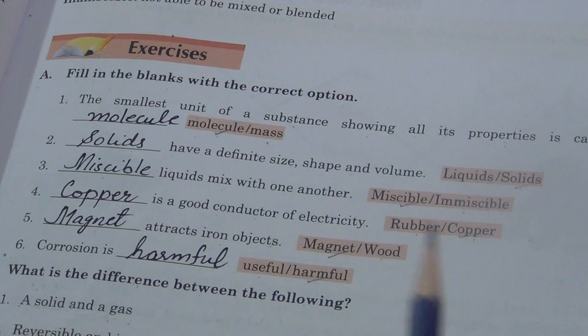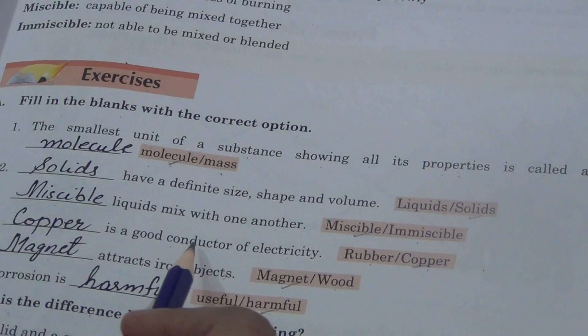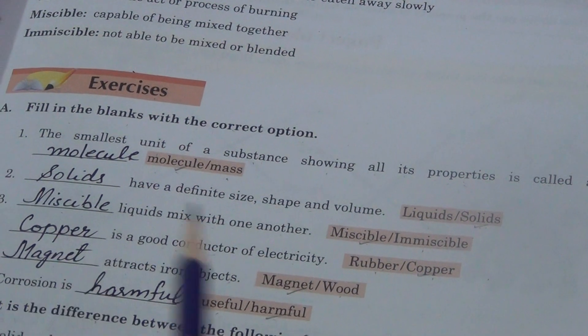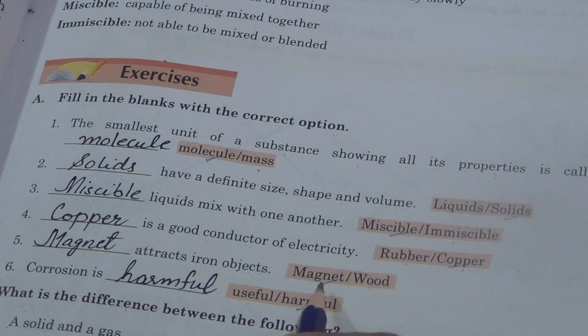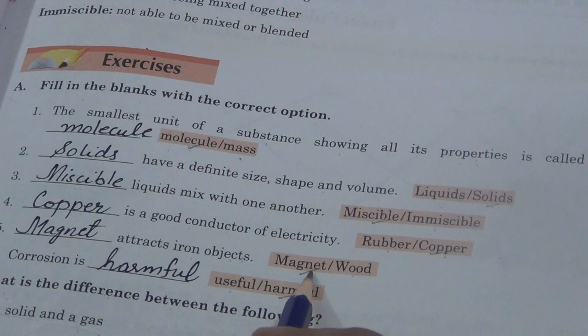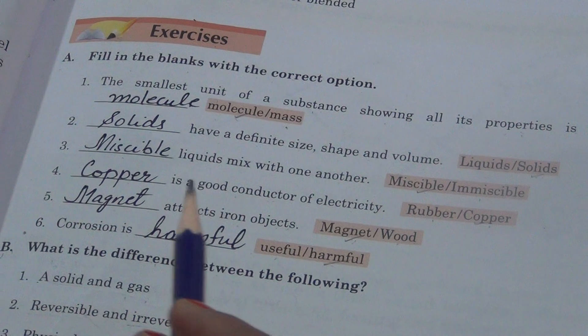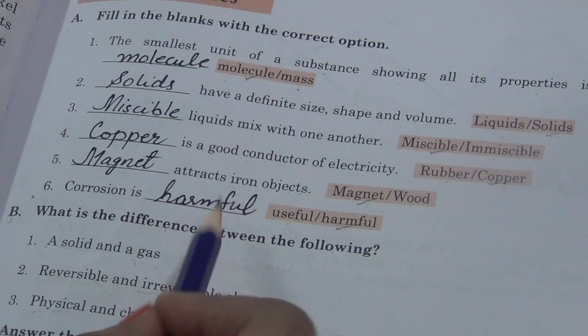Dash is a good conductor of electricity. Rubber and copper. In both of them, which conducts electricity? That is copper. Dash attracts iron objects. Magnet or wood. That is magnet. Corrosion is dash. Useful or harmful. That is harmful for us.